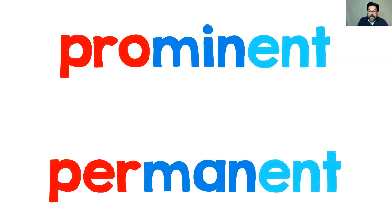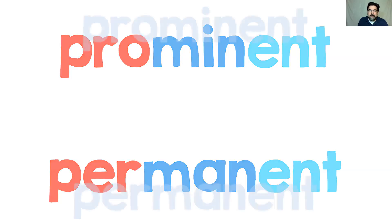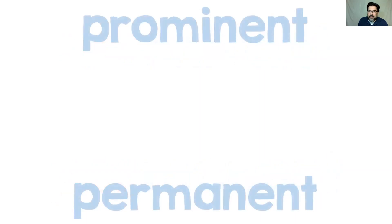Everything else is pretty much the same. They're both three-syllable words. That middle syllable — 'min' or 'man' — you don't say 'permanent' with a full 'man.' Everyone pronounces it 'perm-i-nent,' so it sounds like 'min' — same up top in 'prominent.' Setting aside these words, I've got a sentence here.